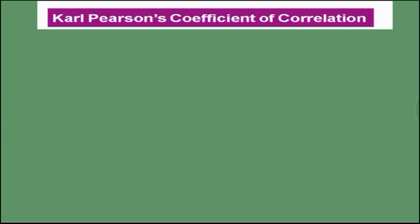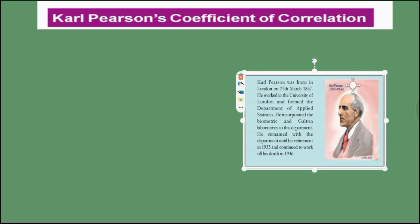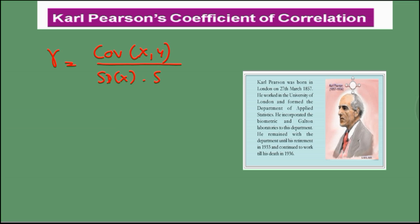Carl Pearson is a famous statistician. He introduced the coefficient of correlation known as Carl Pearson's coefficient of correlation. It is denoted as R or Gamma, and defined as R is equal to Covariance of xy divided by Standard deviation of x into Standard deviation of y — that is, Cov(xy) divided by Sigma x into Sigma y.